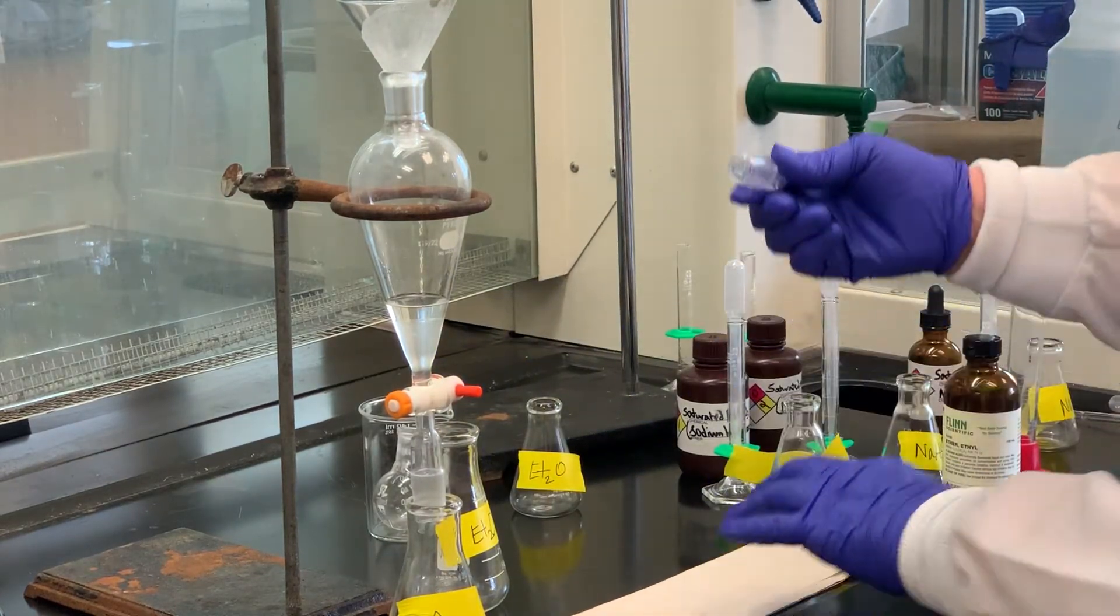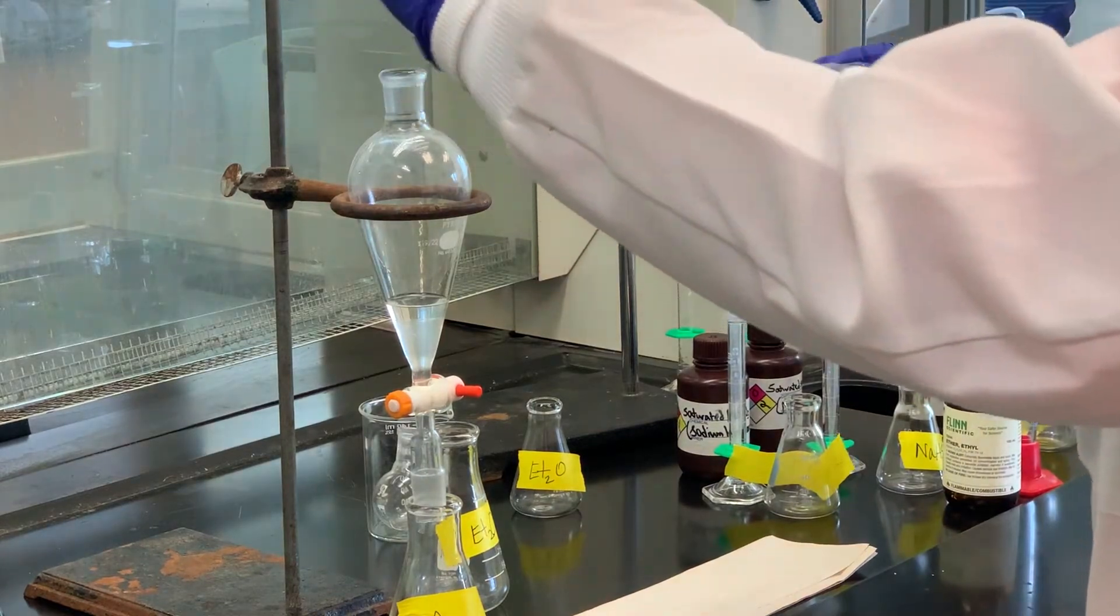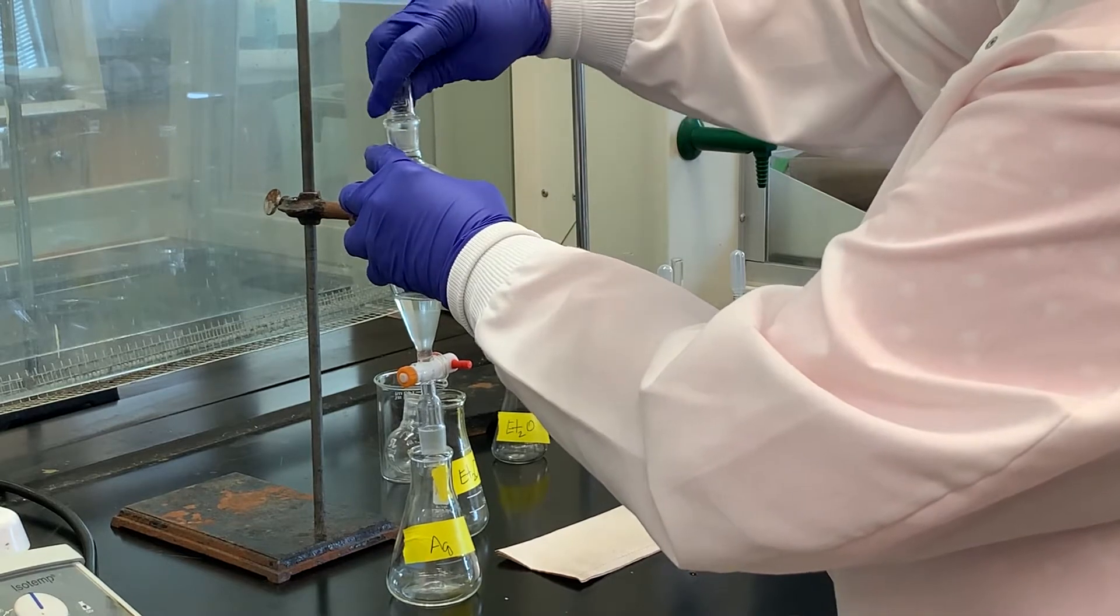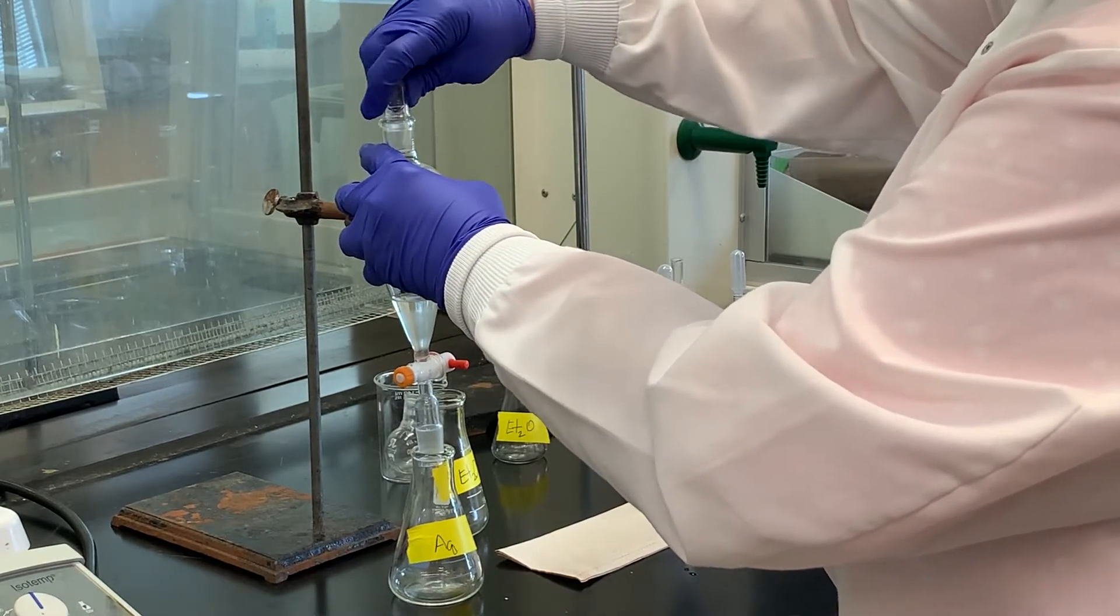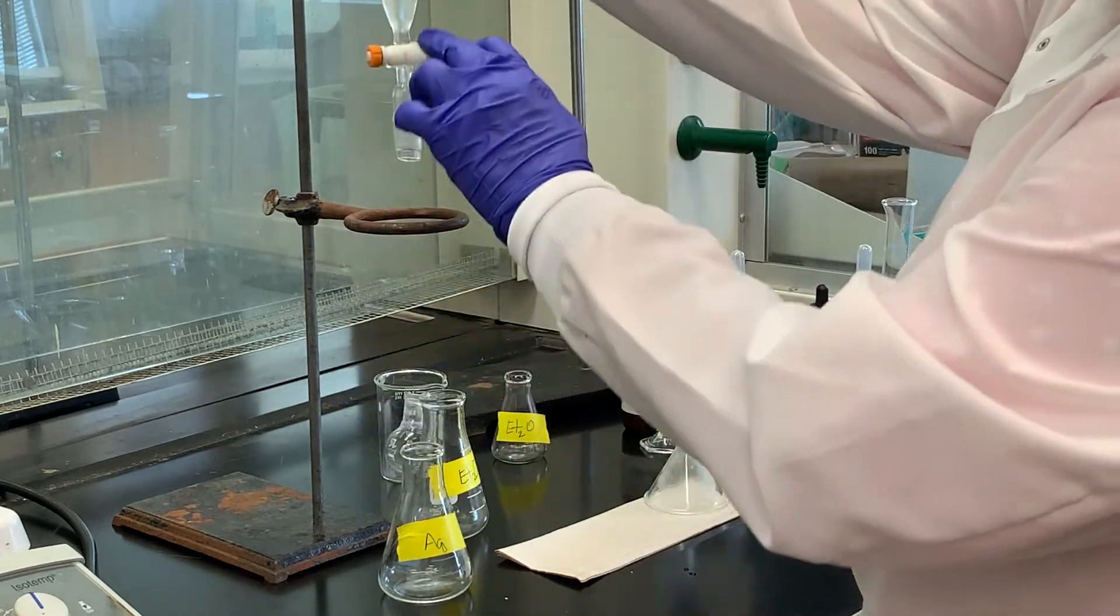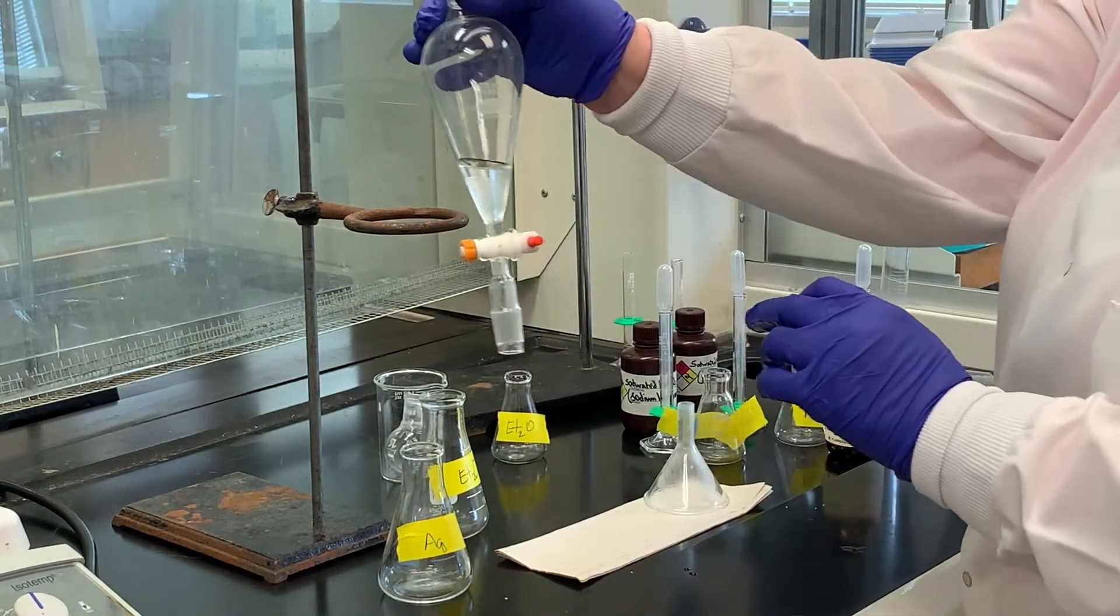I have already greased the stopper. So remember, you always want to make sure that you twist that, rotate it around to make a good seal. I think now we can see the two layers much more clearly.